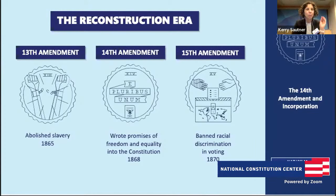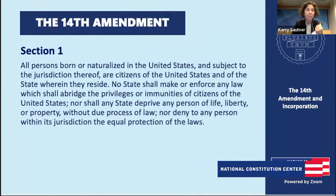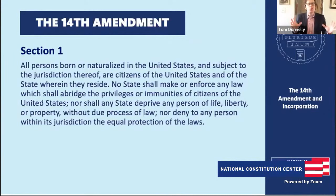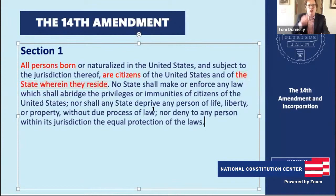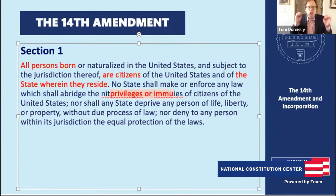Let's look at the words of Section 1 of the 14th Amendment. The first sentence is the citizenship clause: 'All persons born or naturalized in the United States and subject to the jurisdiction thereof are citizens of the United States and of the state wherein they reside.' The second sentence includes three big clauses: the privileges or immunities clause, the due process clause, and the equal protection clause: 'No state shall make or enforce any law which shall abridge the privileges or immunities of citizens of the United States, nor shall any state deprive any person of life, liberty, or property without due process of law, nor deny to any person within its jurisdiction the equal protection of the laws.'